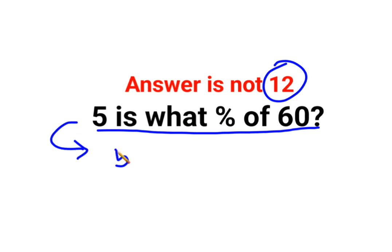So we have: 5 is — meaning equal to — what percent. Let it be x percent. Whenever you have a percentage sign, you need to divide that number by 100 to put it into a fraction.